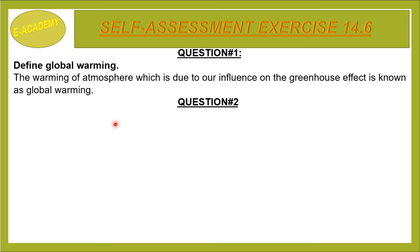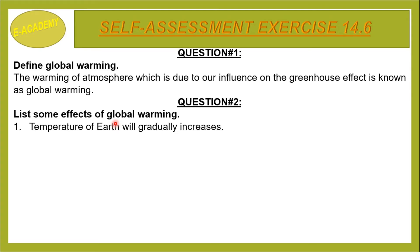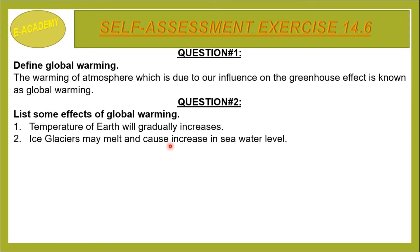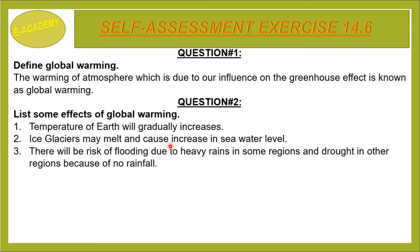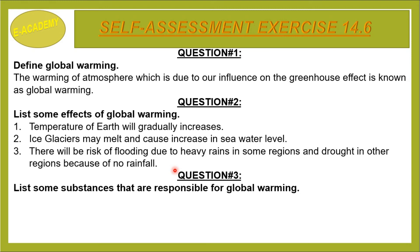Global warming — Question: List some effects of global warming. The temperature of Earth will gradually increase, ice glaciers may melt and cause an increase in sea water level, there will be risk of flooding due to heavy rains in some regions and drought in other regions due to no rainfall. Substances responsible for global warming include methane, CFCs, and CO2.